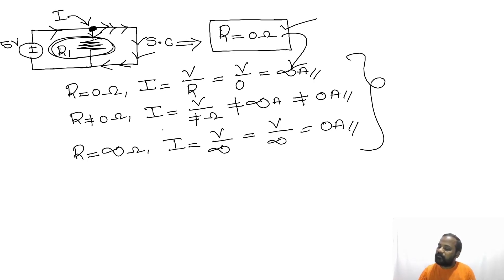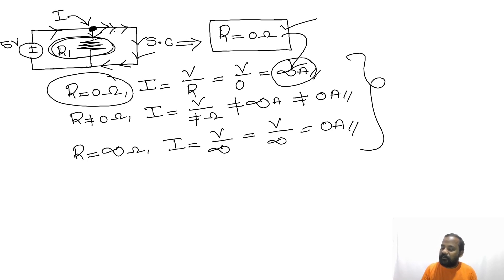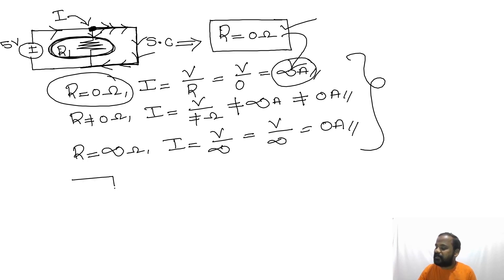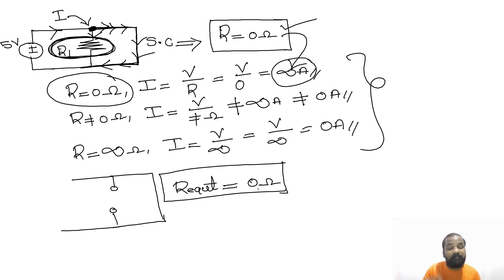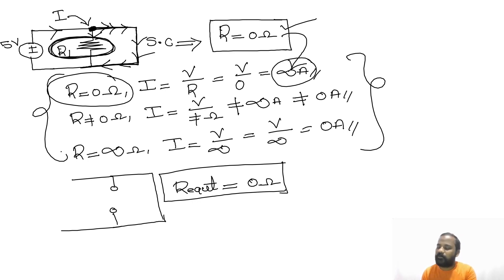Based on these three conditions, the circuit behavior changes. Short circuit means R = 0, so current is infinity — all current flows through the short-circuit branch. The branch with resistance acts as an open branch, and we can open that branch. Therefore, R_equivalent = 0 ohms when a resistance is connected in parallel with a short-circuit branch. Knowing these three conditions clearly, you can easily solve any such problem.